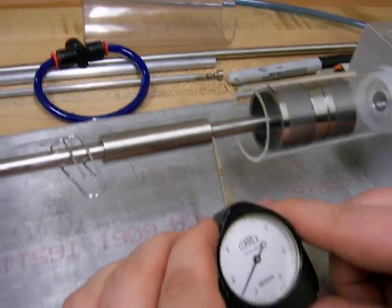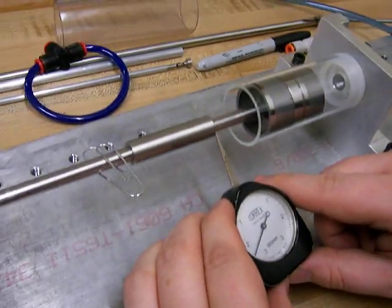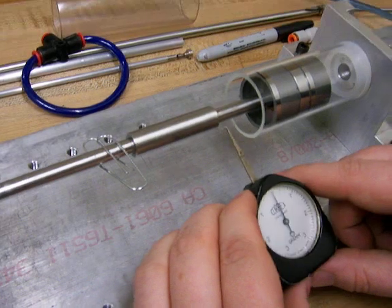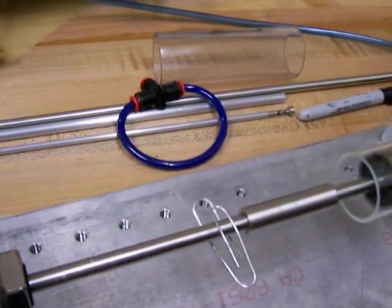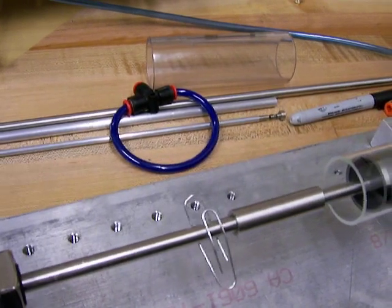Another demonstration of the low friction is you can just spin the rod. We have a little paper clip here just to keep the, so you can kind of see the rod spinning.